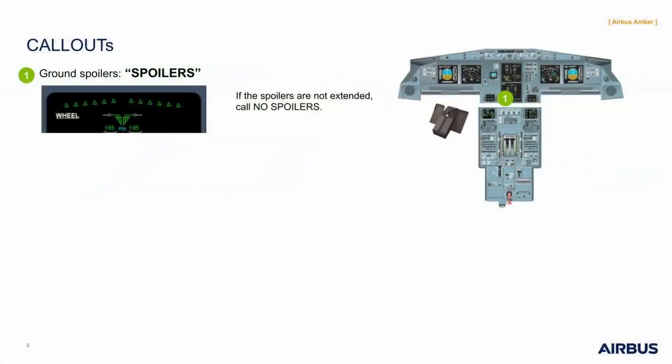A good understanding of the interaction between the systems is definitely really useful during that critical phase of flight. Let's now review the standard call-outs. At touchdown, the pilot monitoring has to follow the standard call-outs related to the deceleration means. The first step is to ensure the spoilers extension with the 'spoilers' call-out. If the spoilers are not extended, call 'no spoilers'.